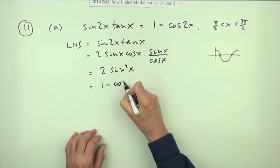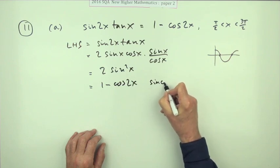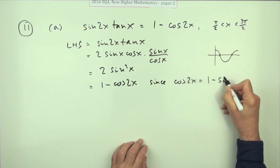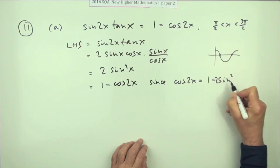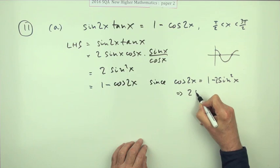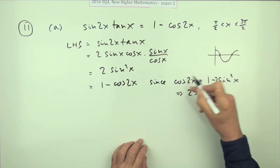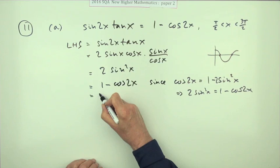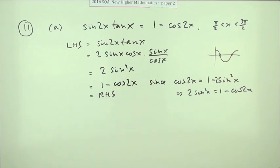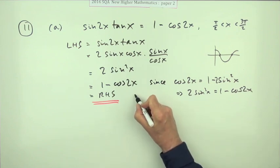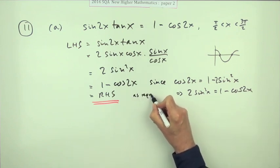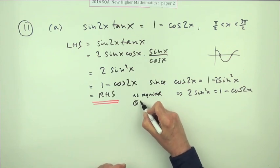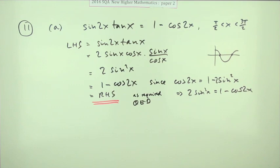I'll just give a reason to the side then. Since cos 2x equals 1 minus 2 sine squared x, that means that 2 sine squared x would be 1 minus cos 2x equals right hand side. If you feel inclined you can put 'as required', whereas we used to put Q.E.D. - that which was meant to be demonstrated.